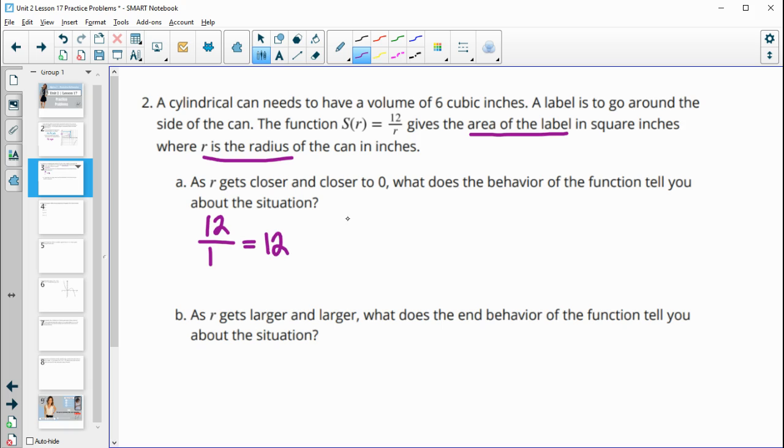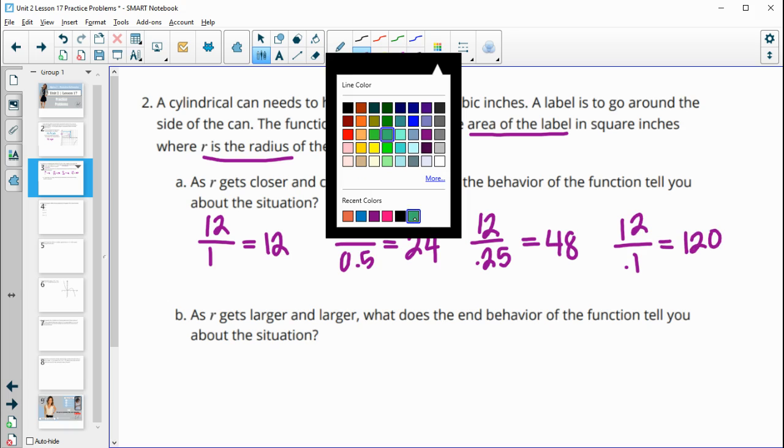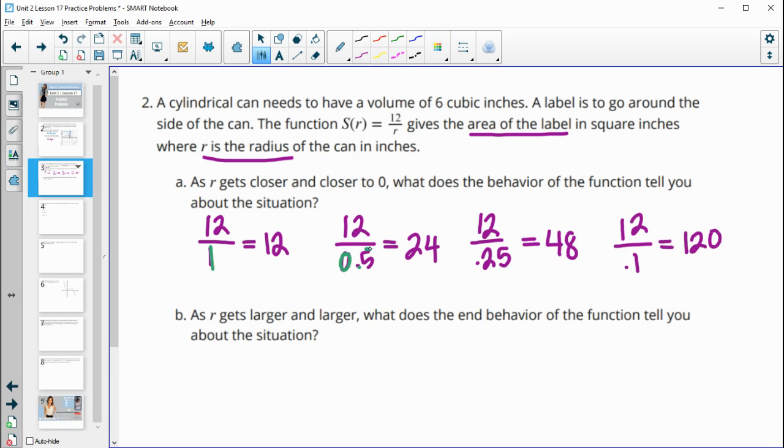So you could just start plugging in values of R. So if I do 12 divided by one, that's 12. And we want to get closer and closer to zero. So I could put in 0.5. So 12 divided by a half is 24. I could put in 12 divided by 0.25, so 12 divided by a fourth is 48. And so this is giving you that surface area. You could plug in 12 divided by 0.1, and that's going to be 120. So as these radii get smaller and smaller, or they get closer and closer to zero, the surface area is getting larger and larger. So the smaller the radius, the larger the surface area.